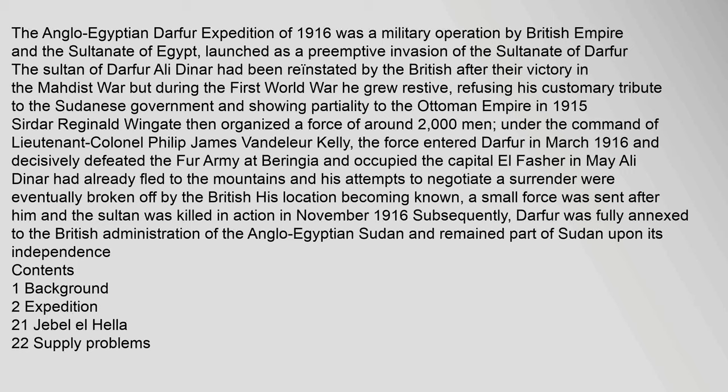The force entered Darfur in March 1916 and decisively defeated the Fur Army at Beringia and occupied the capital El Fasher in May. Ali Dinar had already fled to the mountains and his attempts to negotiate a surrender were eventually broken off by the British. His location becoming known, a small force was sent after him and the Sultan was killed in action in November 1916. Subsequently, Darfur was fully annexed to the British administration of the Anglo-Egyptian Sudan and remained part of Sudan upon its independence.